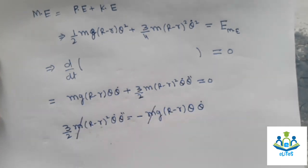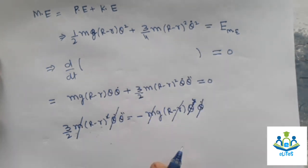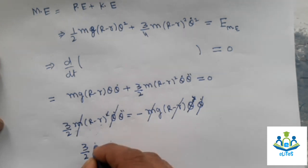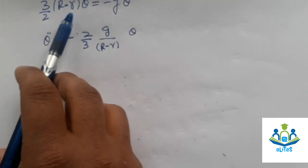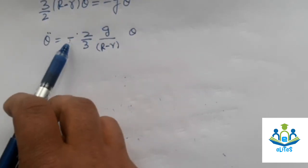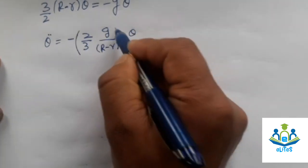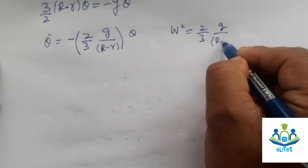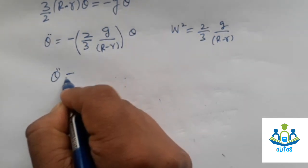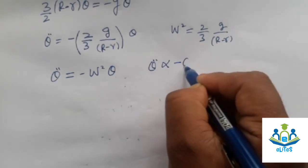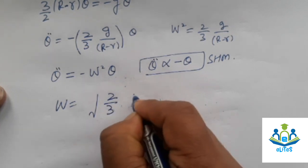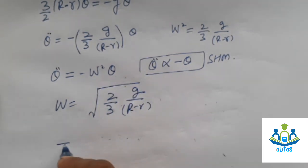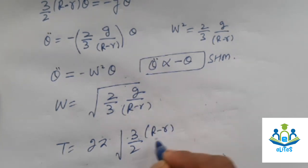Cancelling m, one factor of (R minus r), and theta-dot from both sides, we get: three-halves (R minus r) theta-double-dot equals minus g theta. Therefore theta-double-dot equals minus (2g over 3(R minus r)) theta. Since theta-double-dot is proportional to minus theta, this is simple harmonic motion. Here omega equals square root of 2g over 3(R minus r), and the time period T equals 2 pi times square root of 3(R minus r) over 2g.